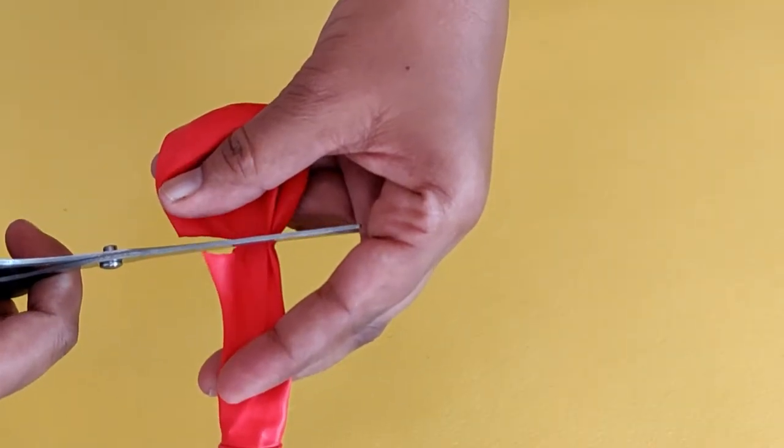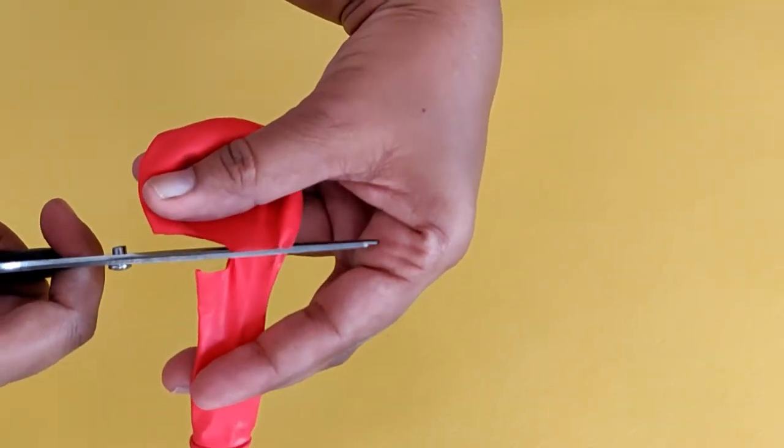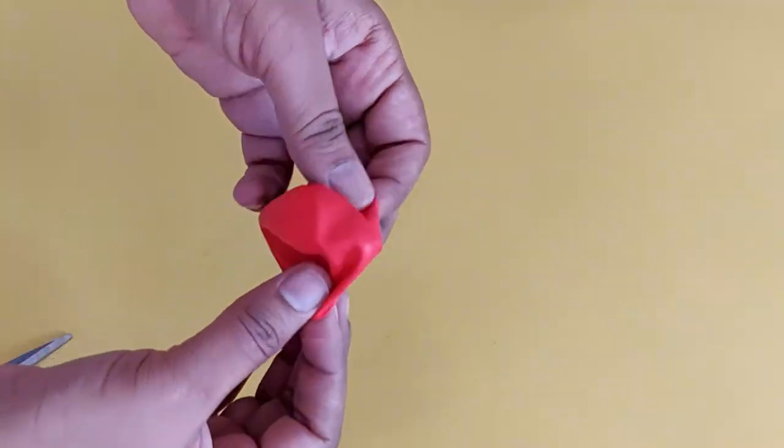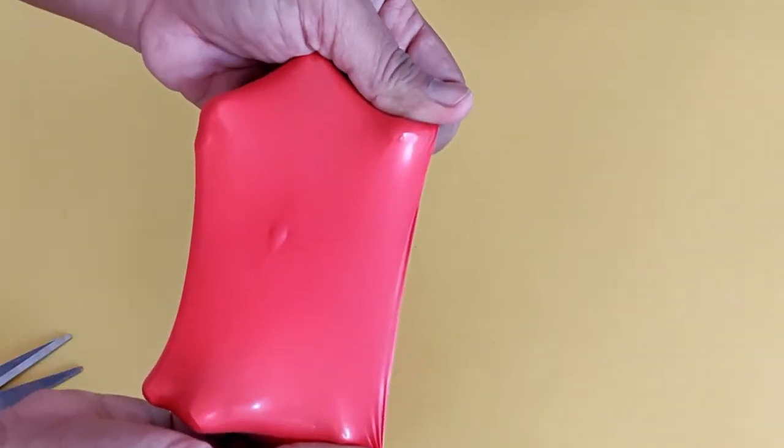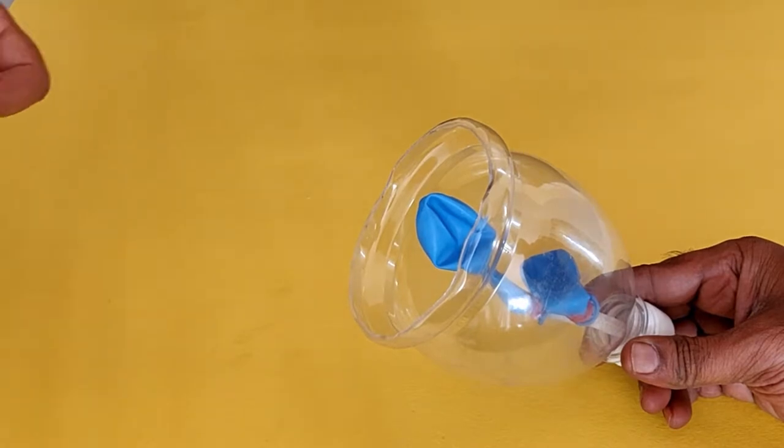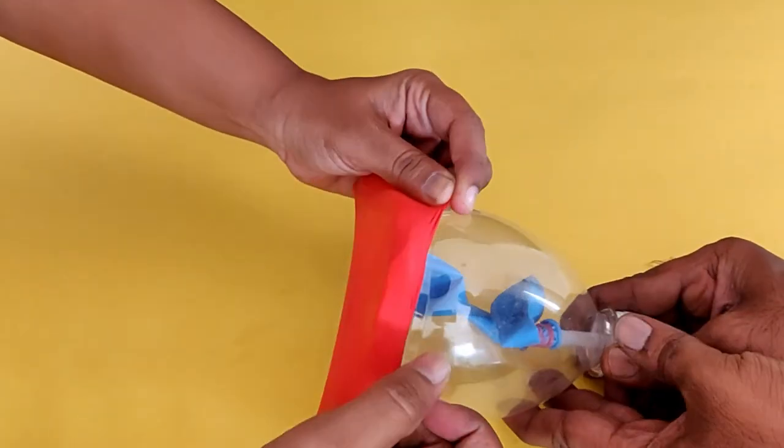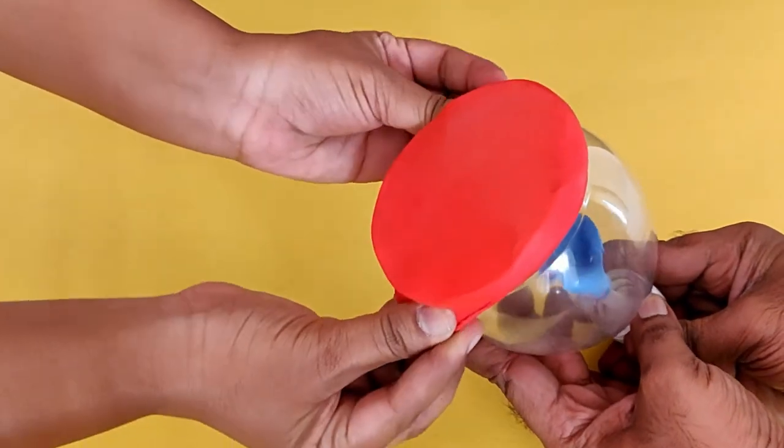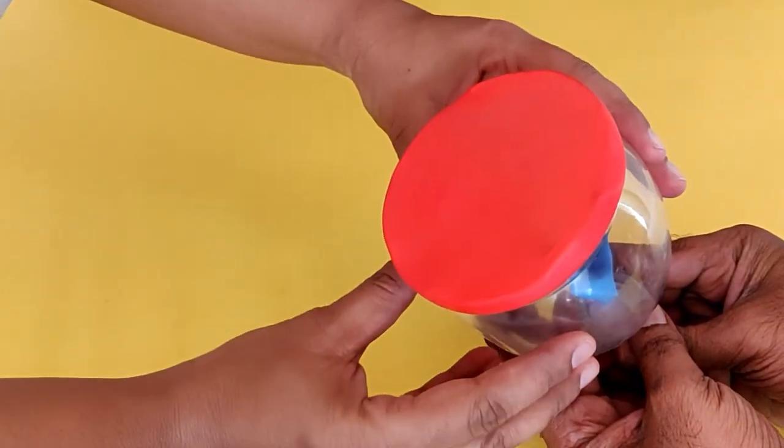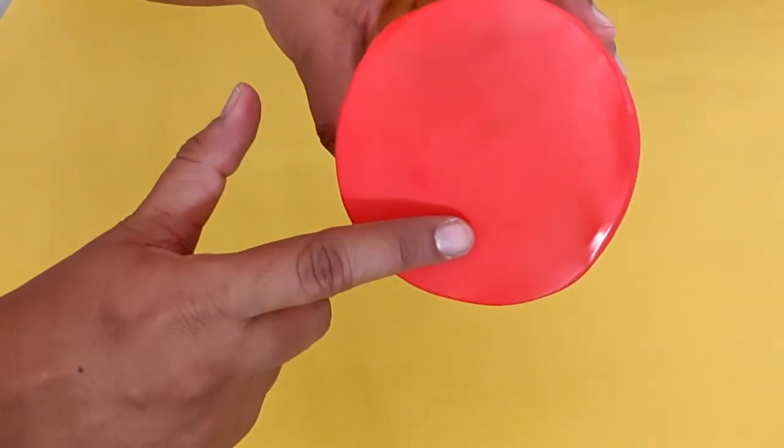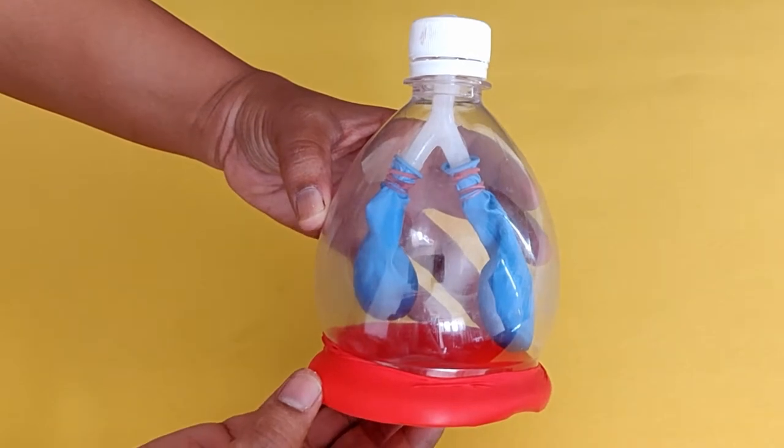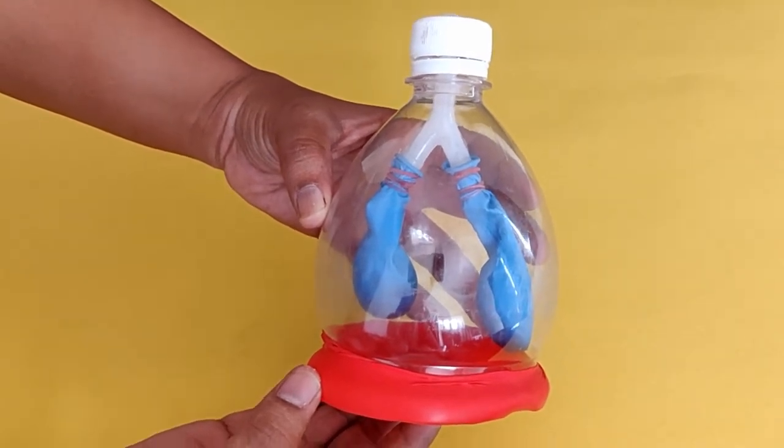To make the diaphragm, cut across the big balloon. With the help of a friend, stretch the balloon over the open base of the bottle. Check if the balloon is taut. The setup is airtight and now ready.